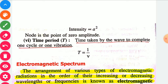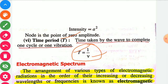Node is the point of zero amplitude. Next point is time period. Time period is defined as the time taken by a wave to complete one cycle or one vibration. Time period is indicated with capital T, and T equals 1 divided by nu. Here T is time period and nu is frequency. In other words, time period is inversely proportional to frequency — if frequency is more, time period will be less, and if frequency is less, time period will be more.